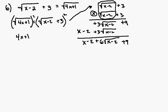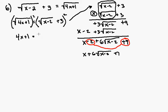Adding my columns, this becomes x minus 2 plus 6 square root of x minus 2 plus 9. Combining like terms — negative 2 and 9 — I wind up getting x plus 6 square root of x minus 2 plus 7. So that's what goes on the right side.